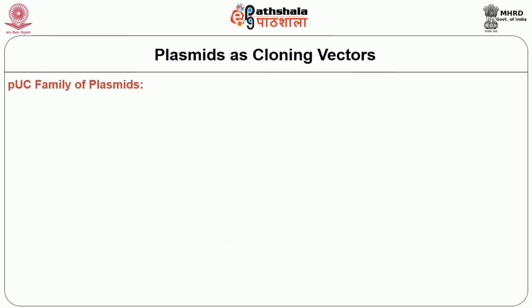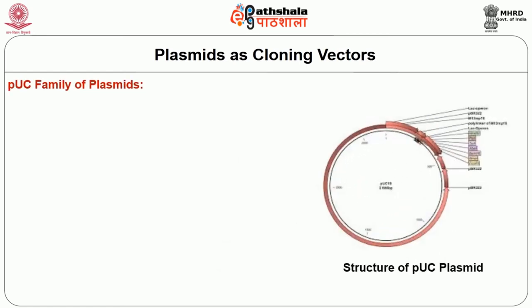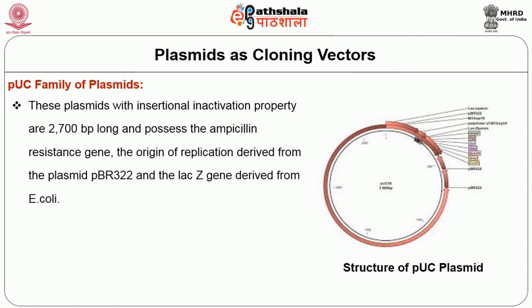Coming to the PUC family of plasmids: they are a series of plasmids that are derivatives of PBR322, used as cloning vectors, and assume their name from the University of California series. You can see the structure of PUC plasmids with their restriction sites, origin of replication, and the insertion site. These plasmids are 2700 bp long and possess the ampicillin resistance gene, the origin of replication derived from PBR322, and the LACZ gene derived from E. coli.